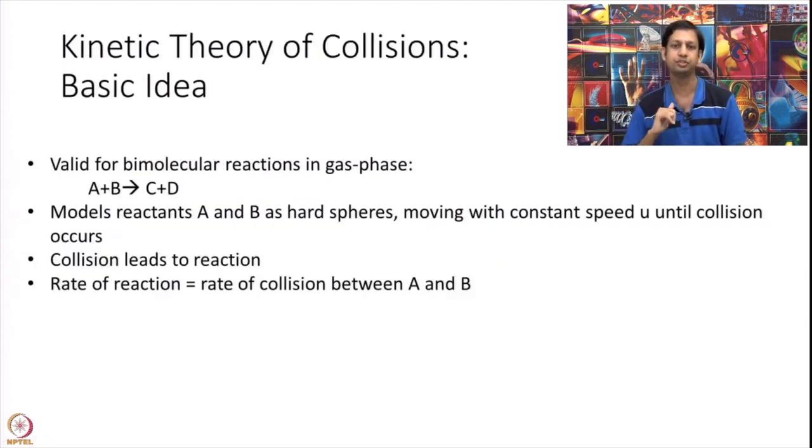Let us come to this kinetic theory and what is the basic idea, what is our model, how are we going to calculate this rate constant. First thing, this model is only for bimolecular reactions. That is, there are two reactants A plus B, this is on the elementary step. So I have A and B, they are reacting together to give me some products. Products can be as many.